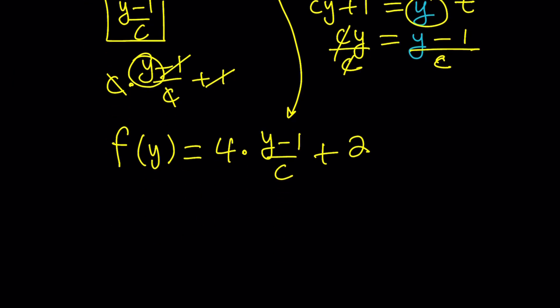Let's go ahead and distribute the 4. This gives us f(y) equals 4y minus 4/c plus 2. And in this case, it's totally up to you. You can make a common denominator if you want, but that's not necessary.